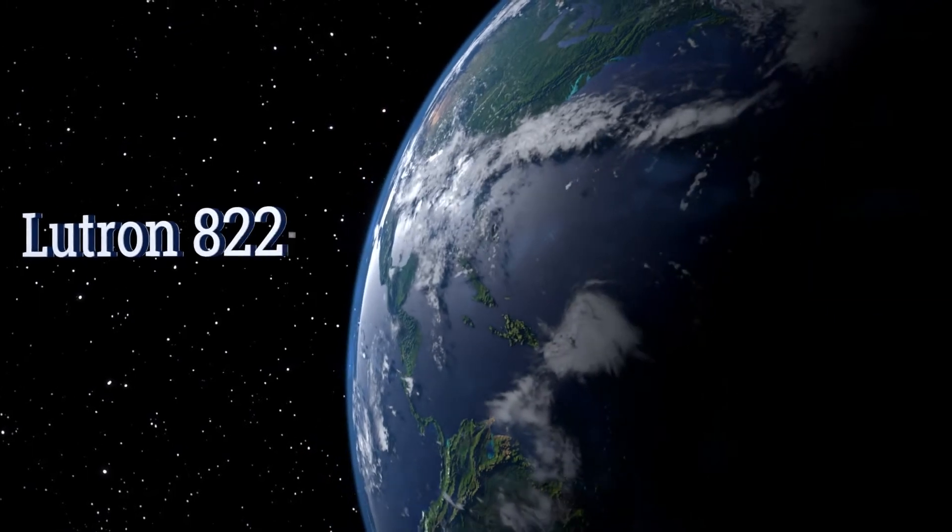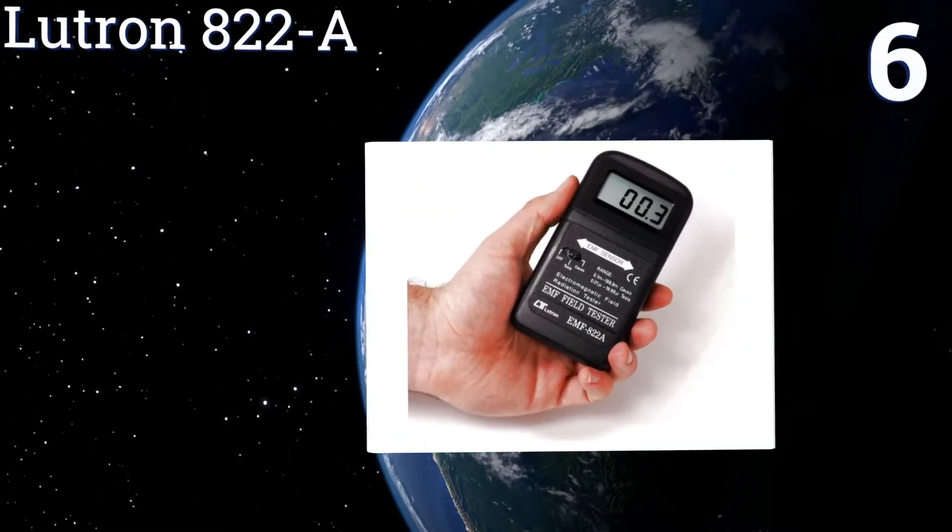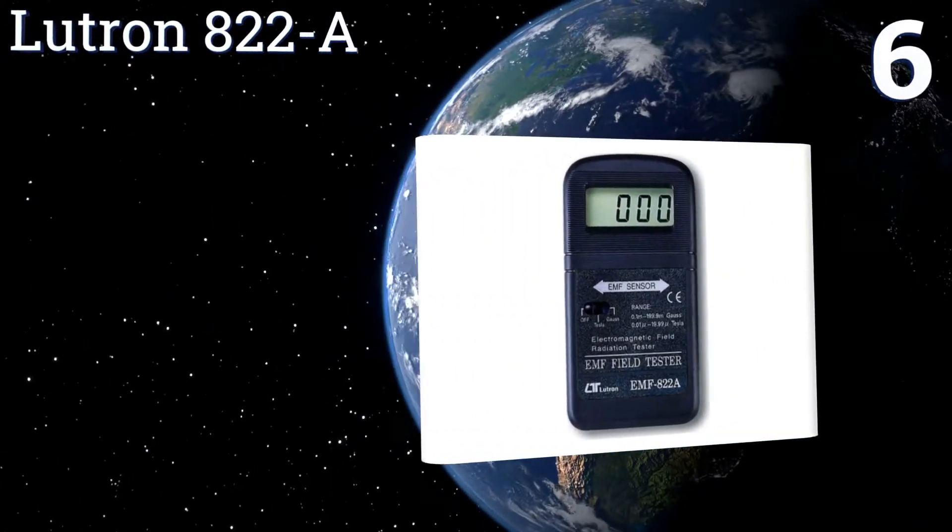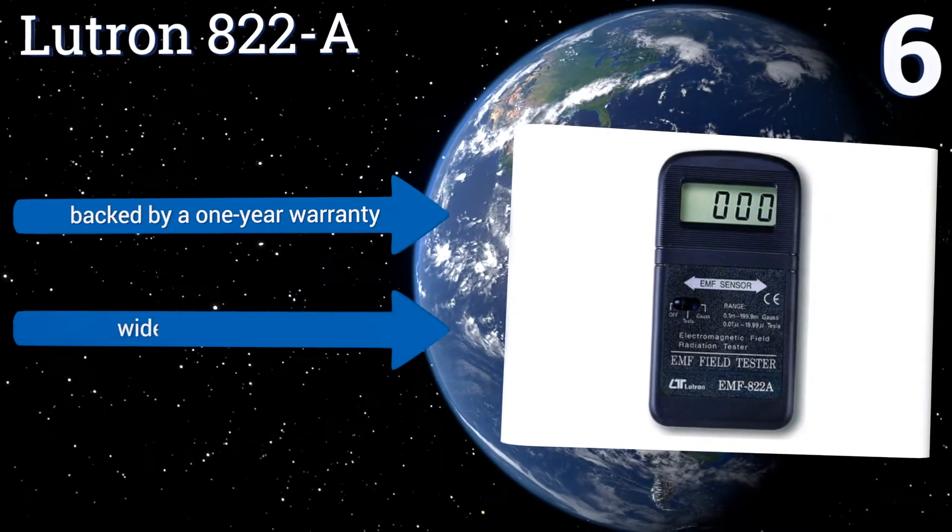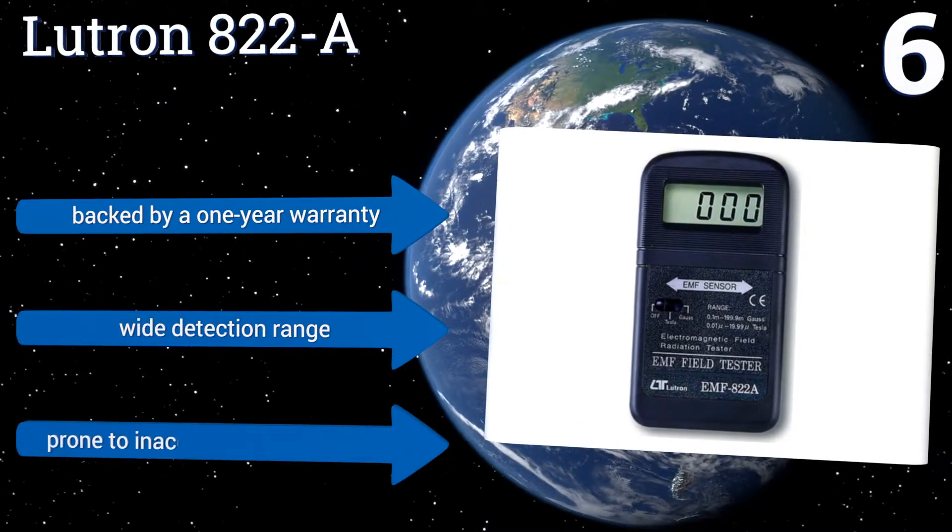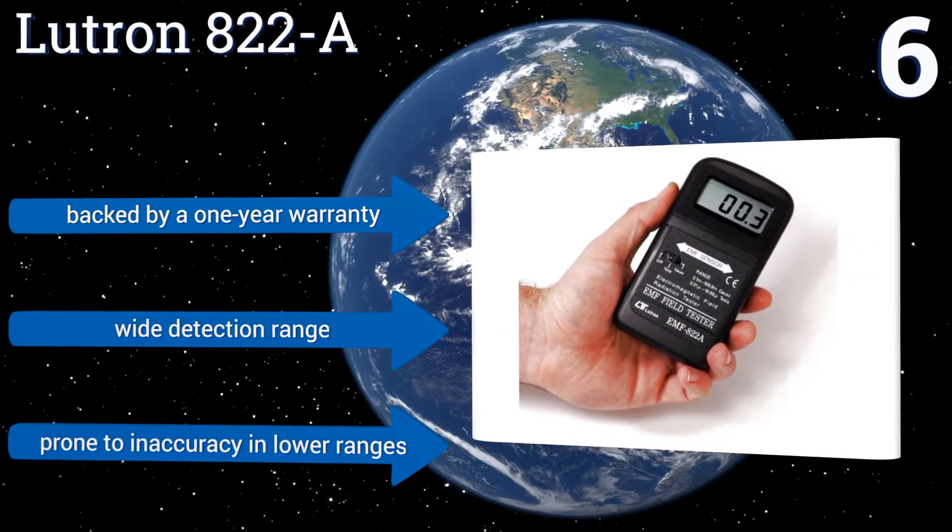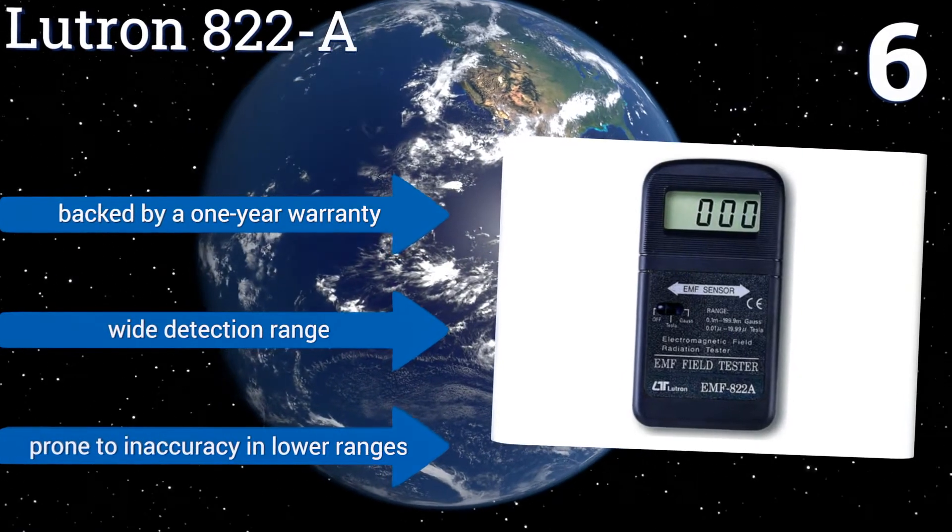At number 6, the Lutron 822A has a crisp clear LCD screen with large digits that makes it easy to see what electromagnetic disturbance levels it's detecting, which it does in both milligauss and micro-Tesla units. It's exceedingly easy to use at just the touch of a single button. It's backed by a one-year warranty and has a wide detection range. However, it is prone to inaccuracy in the lower ranges.